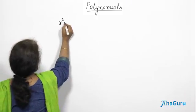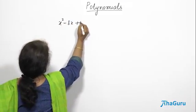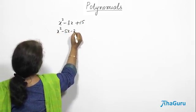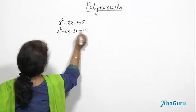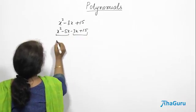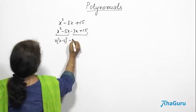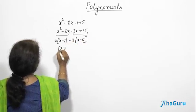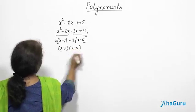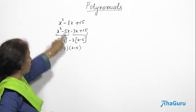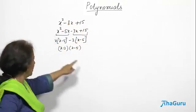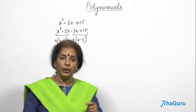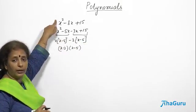Let me take a polynomial x squared minus 8x plus 15. This can be written as x squared minus 5x minus 3x plus 15. The two factors can be written as x(x minus 5) minus 3(x minus 5). So x minus 3 and x minus 5 are the two factors of the original quadratic polynomial. Making them equal to 0 will give me the zeros of this quadratic polynomial.